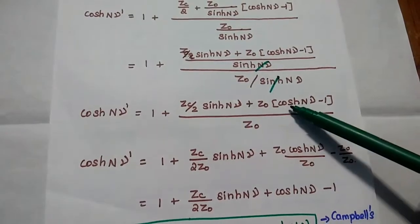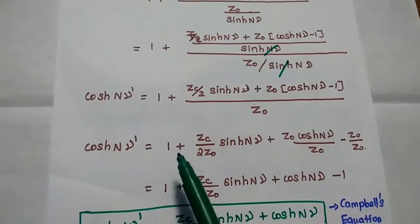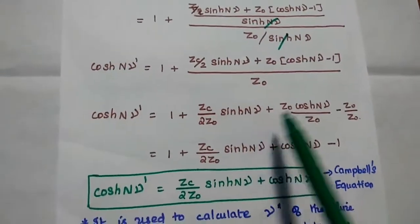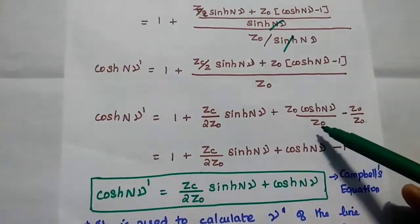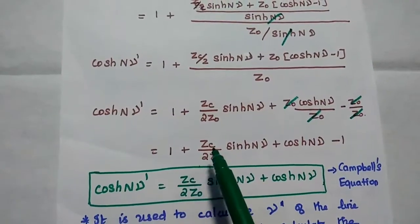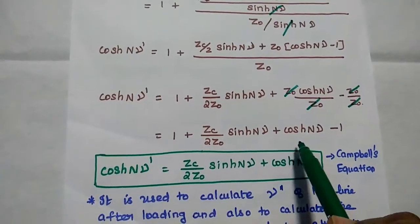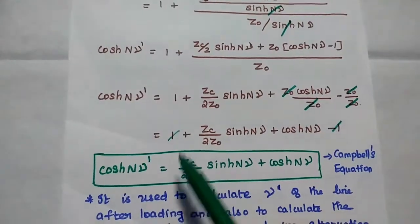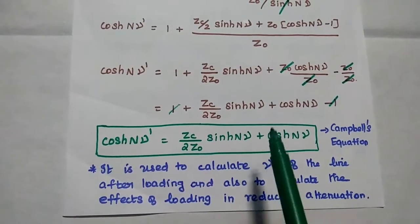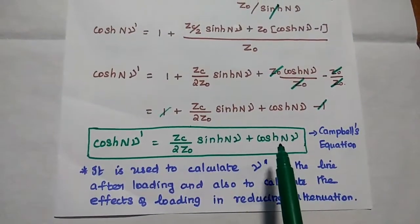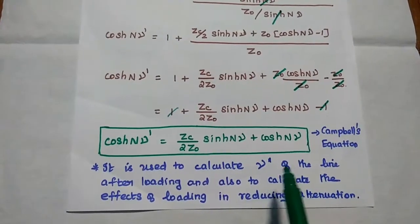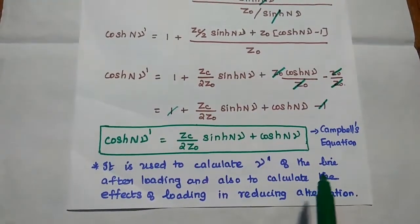Taking Z0 for each term and multiplying inside, we get 1 plus ZC by 2 Z0 multiplied by sinh(Nγ) plus cosh(Nγ) divided by Z0 minus Z0 divided by Z0. Simplifying, this becomes 1 plus ZC divided by 2Z0 multiplied by sinh(Nγ) plus cosh(Nγ) minus 1. Cancelling the +1 and -1, we finally get: cosh(Nγ dash) is equal to ZC divided by 2Z0 multiplied by sinh(Nγ) plus cosh(Nγ). This is Campbell's equation. It is mainly used to calculate the propagation constant after loading the line, and also to calculate the effect of loading in reducing attenuation and distortion.